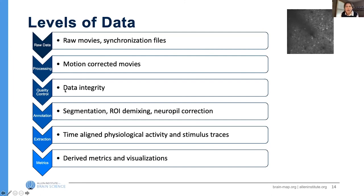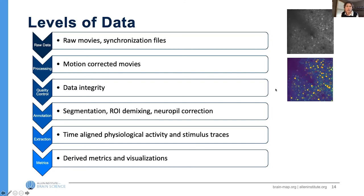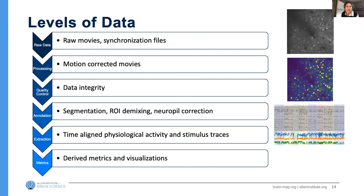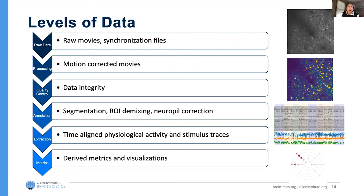The movies go through processing stages where we identify where cells are located in order to extract activity traces for individual cells. We also do demixing for overlapping cells, temporal alignment to integrate stimulus information, and we can compute metrics about receptive field sizes or tuning properties. When thinking about what data to share, we could go from our raw data — big awkward files requiring a lot of processing — all the way down to derived metrics, which are easy to share. We could have a simple spreadsheet with 63,000 cells and hundreds of metrics. But what really is the most effective and useful level for sharing?